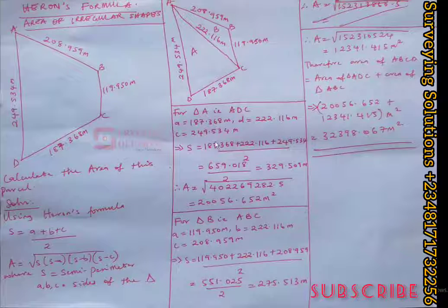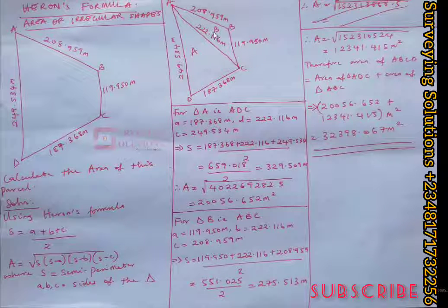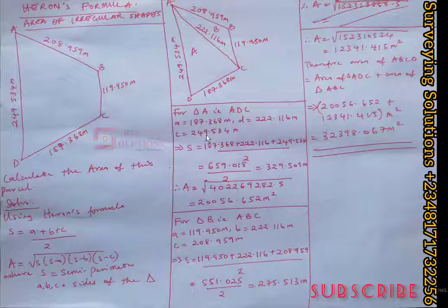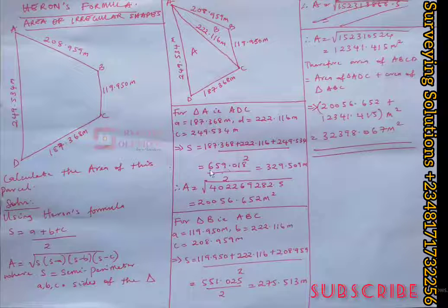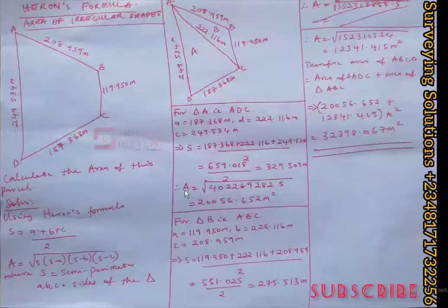For Triangle ADC: side a (opposite angle A) = 187.368 m, side b (the diagonal AC) = 222.116 m, and side c = 249.534 m. Applying the semi-perimeter formula S = (a + b + c) / 2, the sum is 659.018, divided by 2 gives S = 329.509 meters. Please confirm this answer on your calculator.